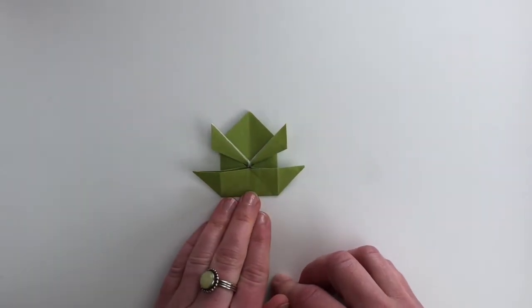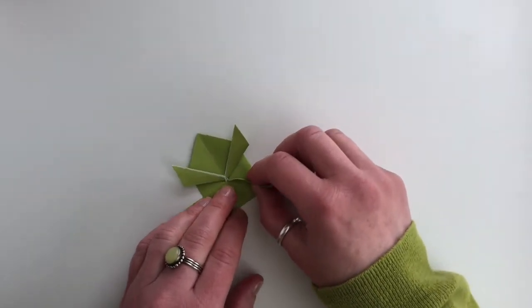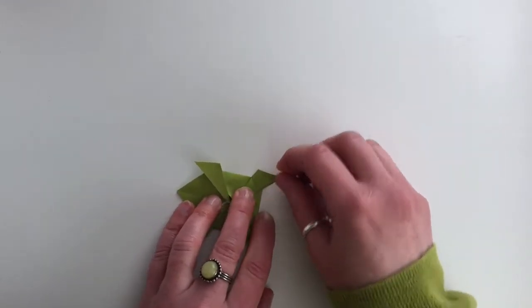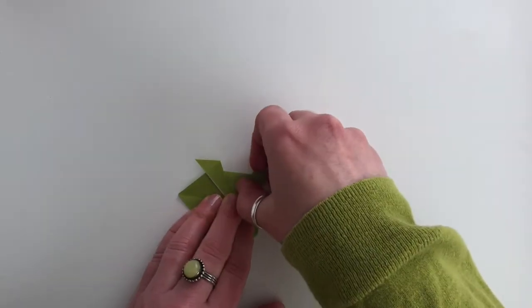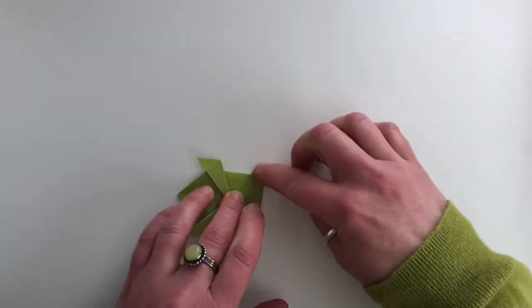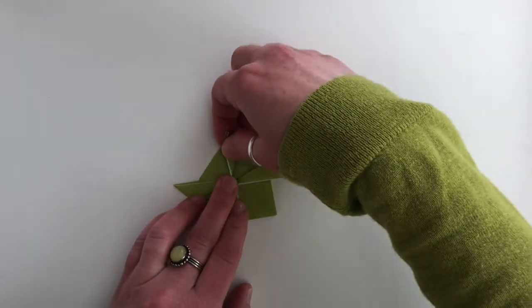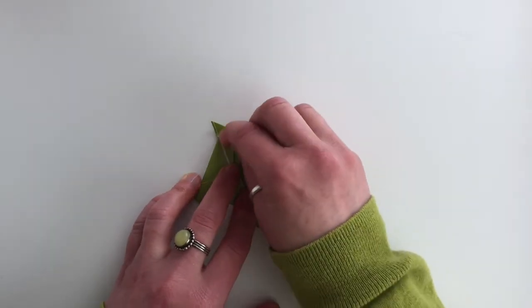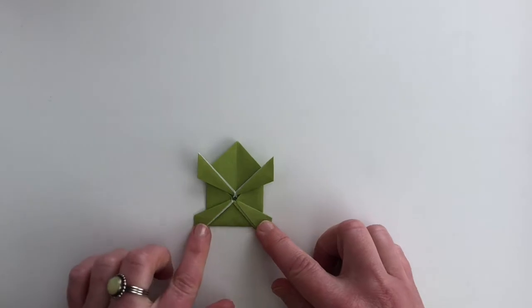And now we're ready to fold our back legs. We're going to make a mirrored shape from the front legs. Again from the center, making sure that these edges are aligned and parallel. And then crease. Turn it around and do it on the other side, and give it a good crease. And now we have a frog with four legs.